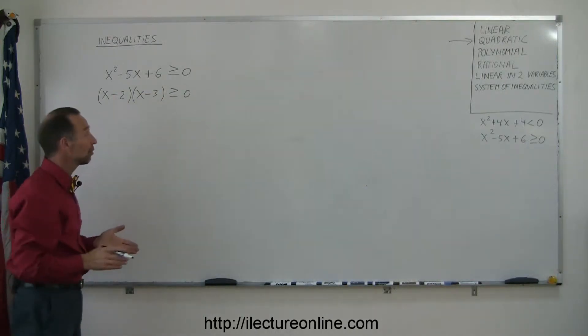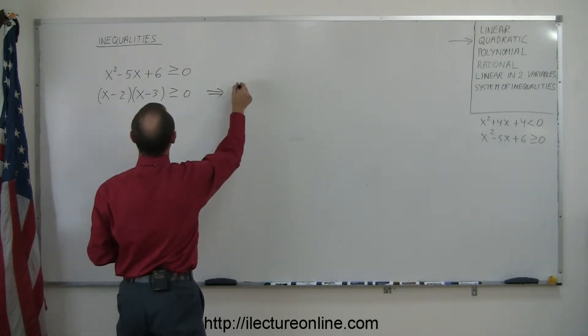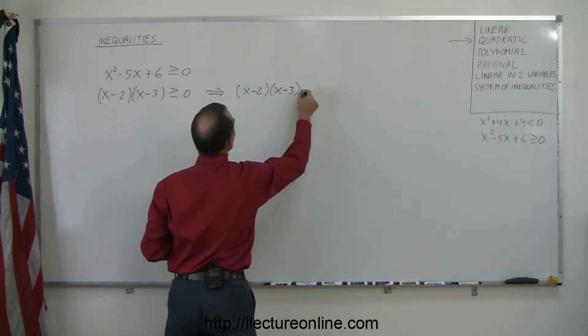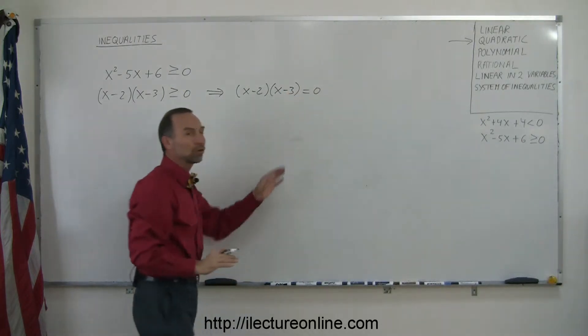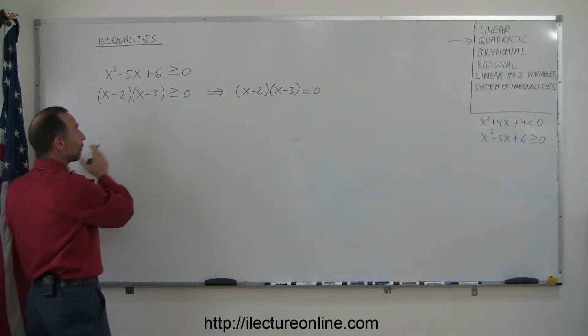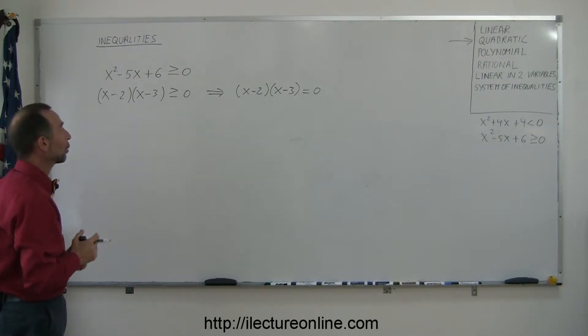Now the next step is to write the equivalent equation. We write (x - 2)(x - 3) = 0. We do that because the solution of this will give us the critical points, the points that will delineate the various regions that may either be part of the solution or not part of the solution to the inequality.